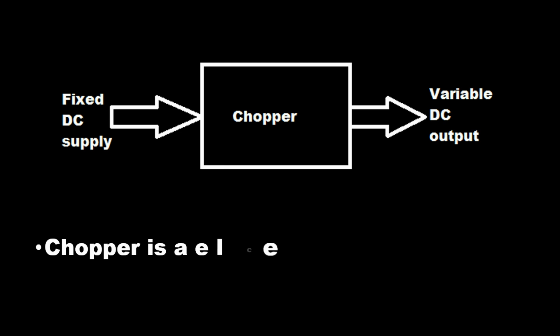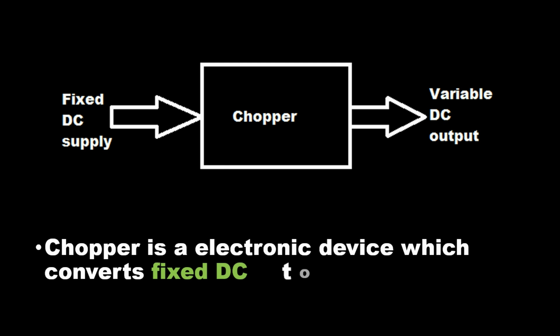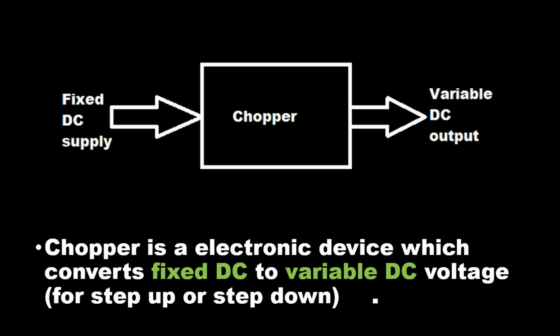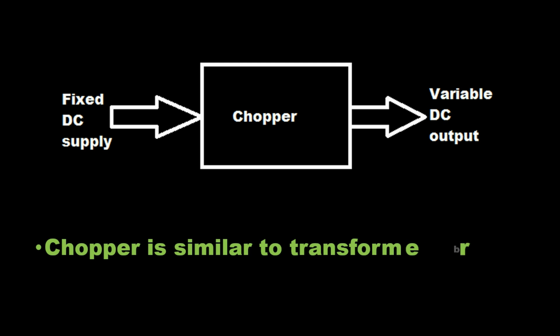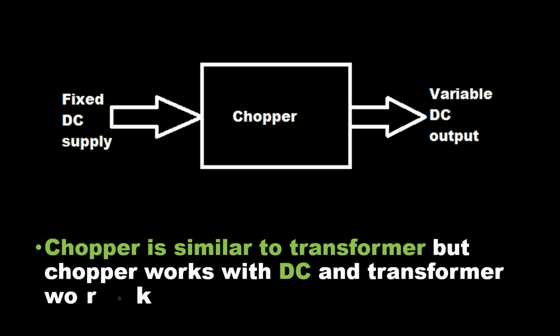Chopper control DC motor. Chopper is an electronic device which converts fixed DC to variable DC voltage for step up or step down. Chopper is similar to transformer but chopper works with DC and transformer works with AC.